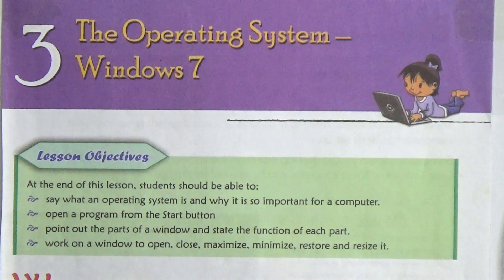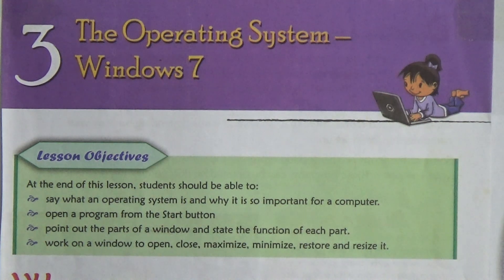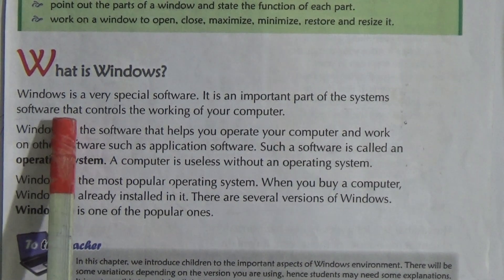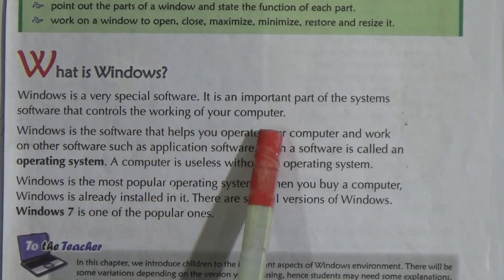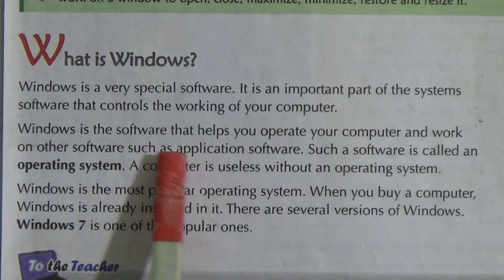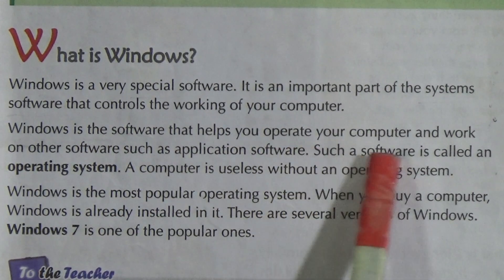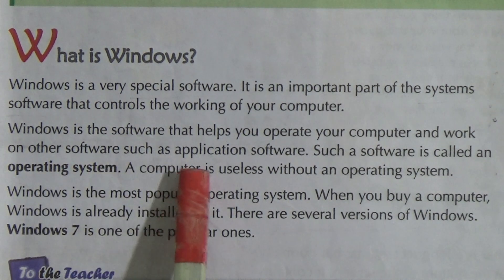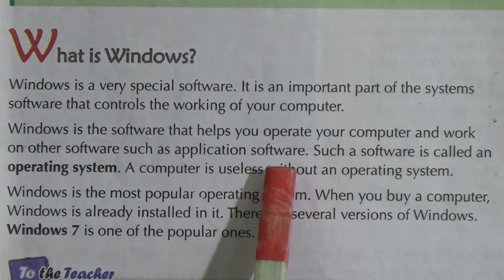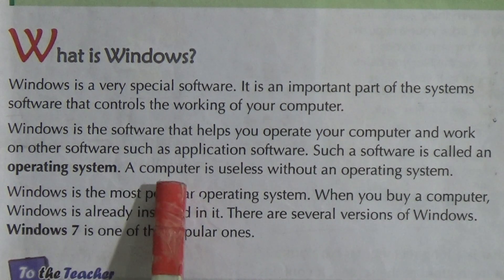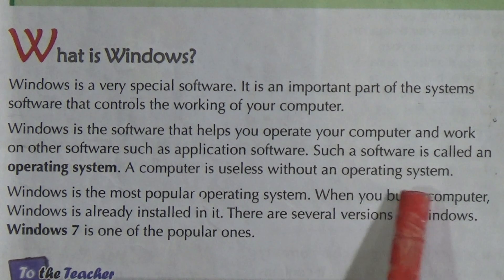Windows is a very special software. It is an important part of the system software that controls the working of your computer. Windows is the software that helps you operate your computer and work on other software, such as application software. Such software is called an operating system.